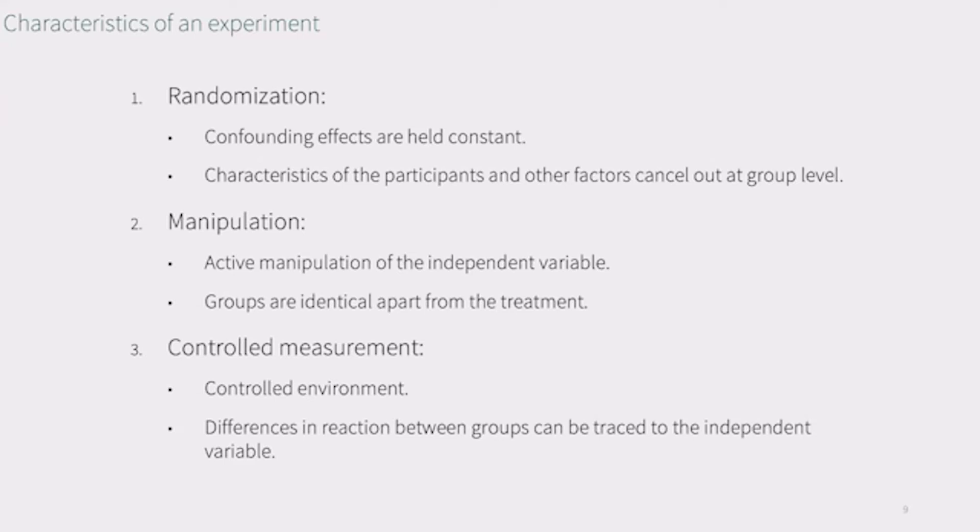Last, in experiments, we use controlled measurements so that we can make sure the reaction options are the same for all groups. Thereby, we can make sure that differences between reactions in the groups are indeed traceable to the independent variable and not to some factor in the environment. Given the setup, controlled experiments can be used to pinpoint cause-effect relationships.